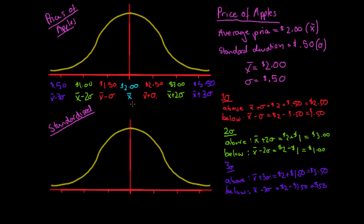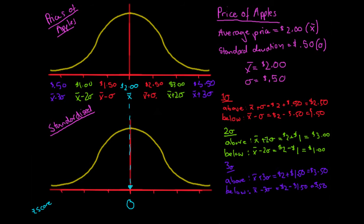I won't show how to calculate a z-score in this video — I'll do that in another video. I'll just show how we get to z-scores and what they are. For our standardized normal distribution, the mean is zero. So if I translate the mean price of $2 from the unstandardized curve, it gives a z-score of zero.